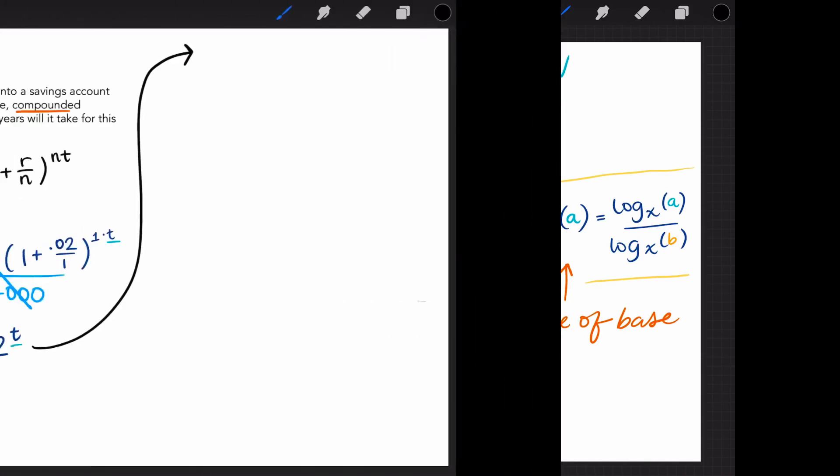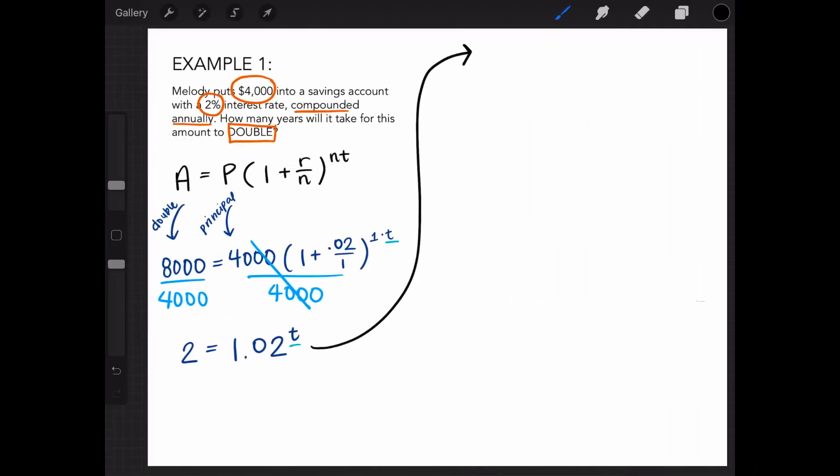So let's get back to Melody's example. We left off with 2 equals 1.02 to the power of t. Using the same log rules from earlier, we can take the log of both sides so that log of 2 will equal log of 1.02 to the t power. And if we use the base of 1.02, this will cancel itself out. That means we are left with log base 1.02 of 2 equals t.